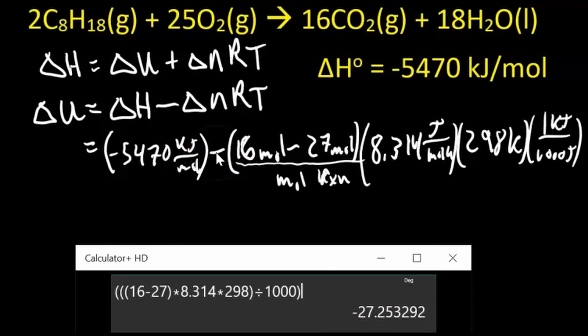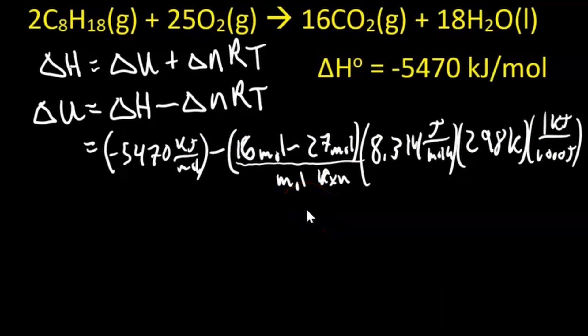Now this is negative, so we're subtracting a negative. So I'm just going to make this positive. This is negative, but this whole thing is negative, so we have subtracting a negative makes it positive, so we have 27.25, so plus 27.25.